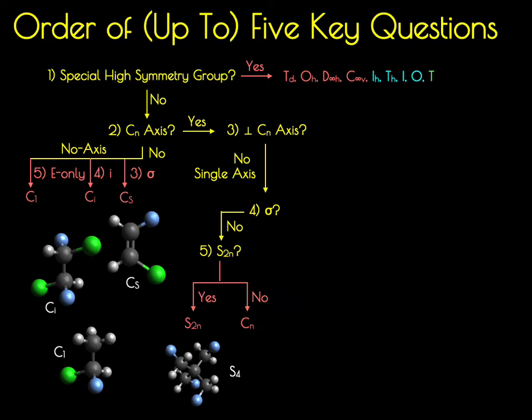For example, this fluorine-substituted isopentane is in the S4 point group — there's a C2 rotational axis through the molecule, and performing an S4 rotation gives back the same molecule. If there's no mirror plane and no improper rotational axis, then you're in a CN point group. Going back to question 4 about the mirror plane: if there is a mirror plane, you ask what type it is. If it's a horizontal mirror plane, you're in a CNH point group; if vertical, you're in a CNV point group.